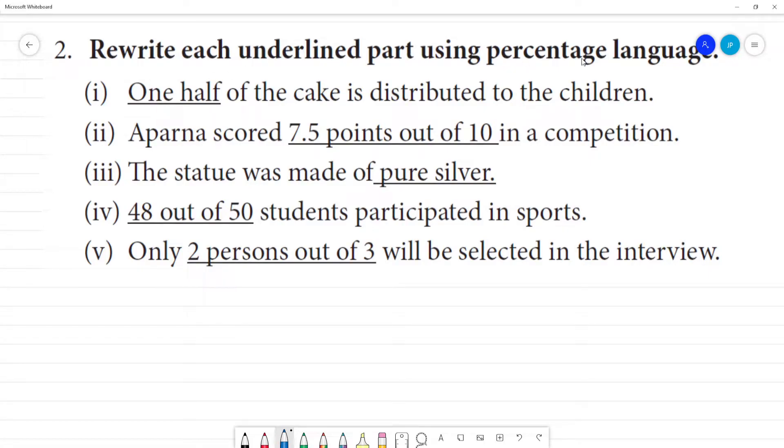Rewrite each underlined part using percentage language. First one: one half of a cake is distributed to the children. So what is one half? That would be how much percentage? One half, the fraction multiplied by 100. So the answer is 50 percent of the cake is distributed to the children.